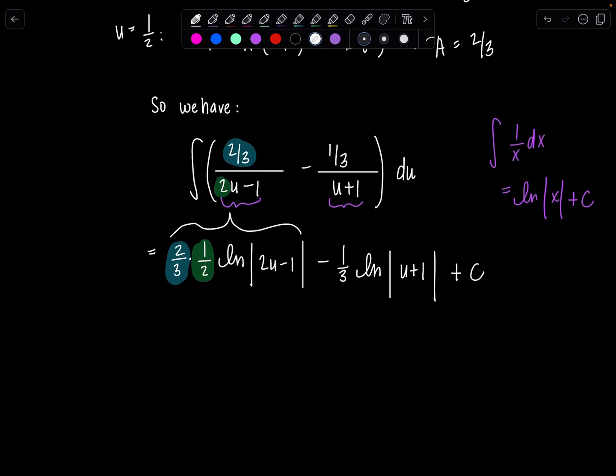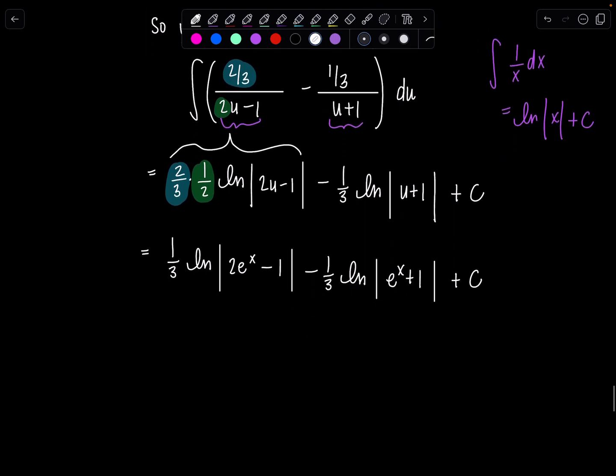And then 2 thirds and 1 half cancelled. I just have 1 third. Natural log absolute value. Remember what u was? Yes, it was e to the x. So let's sub that all back in. Minus 1 third natural log absolute value e to the x plus 1 plus c. And then I can factor out a 1 third and then combine all of this into a single logarithm. That'll be beautiful. So 1 third natural log absolute value.